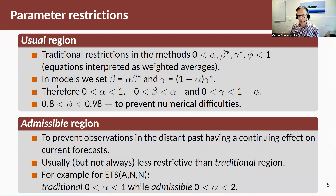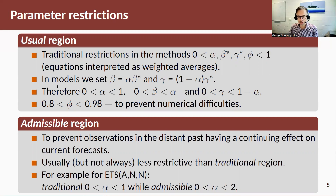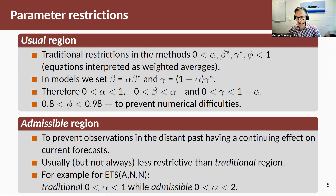You can think about these restrictions more mathematically: we want to prevent observations in the distant past from continuing to affect current forecasts — that's the idea of exponential smoothing. There is a set of restrictions defining what we call the admissible region, which is usually but not always less restrictive than the traditional region. For the simple ETS(A,N,N) model, the traditional restriction is α ∈ (0,1), while the admissible region is α ∈ (0,2). The ETS function accounts for both; in some cases the admissible region is more restrictive and ETS will impose that.